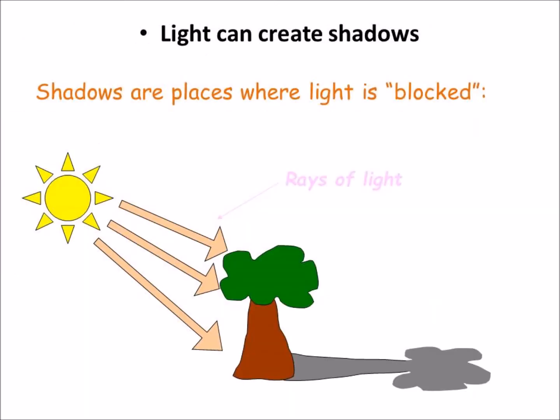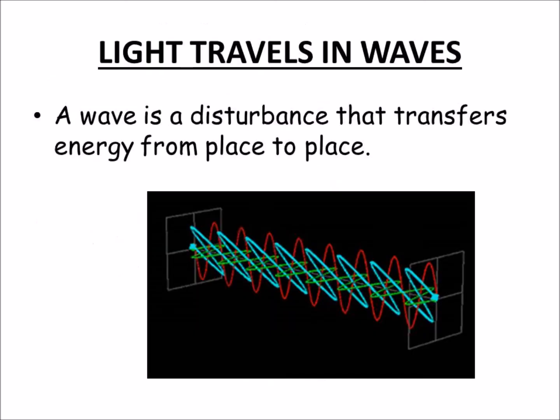Property number three: light can create shadows. Shadows are places where light is blocked — here we see one example. Property number four: light travels in waves. A wave is a disturbance that transfers energy from place to place.